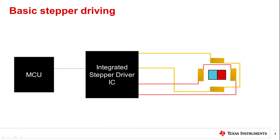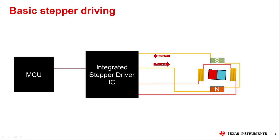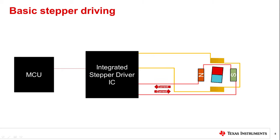Integrated stepper drivers control rotor position by energizing the stepper windings in a particular sequence. In this example, the microcontroller sends a pulse to the stepper driver to indicate that the stepper rotor should move to the next position. When the stepper driver receives the step pulse, it energizes one of the phase windings in the sequence. When it receives the next pulse, it energizes the next phase so the rotor can continue moving. The H-bridges integrated in the stepper driver control the current in the phase windings in both directions to change the polarity of the windings and continue moving the rotor. If the microcontroller stops sending step pulses, the rotor will remain stationary and aligned with the magnetic field of the energized phase. Integrated stepper drivers often implement additional features for protection, microstepping, and stepper tuning.